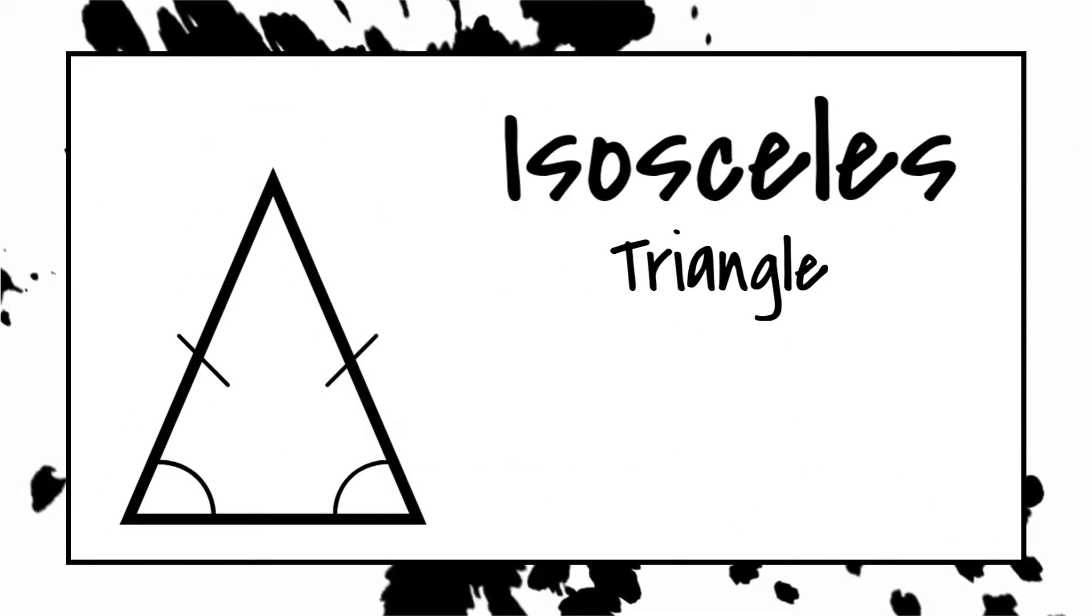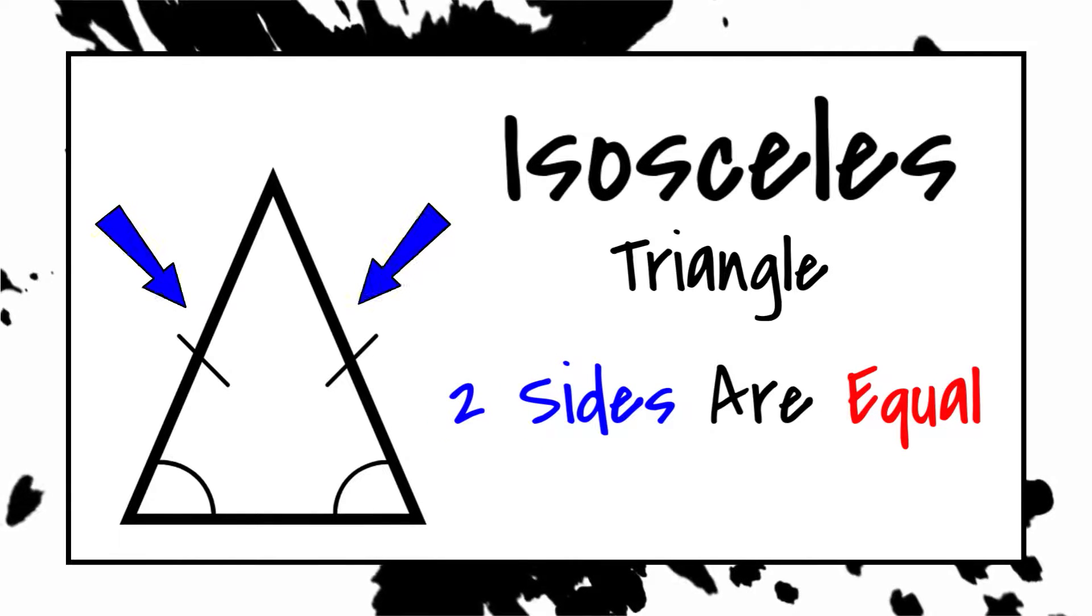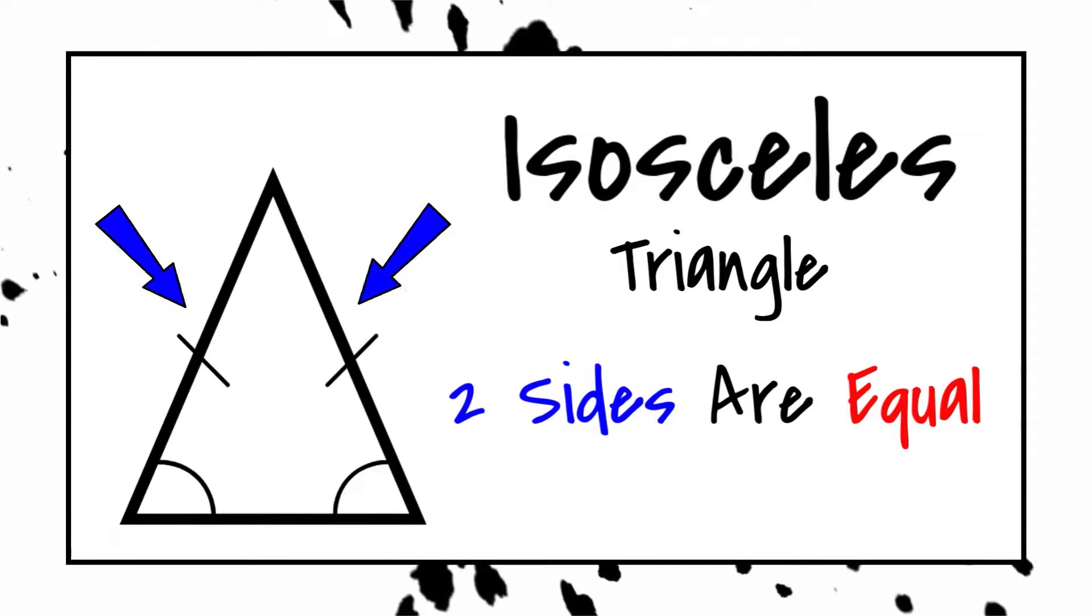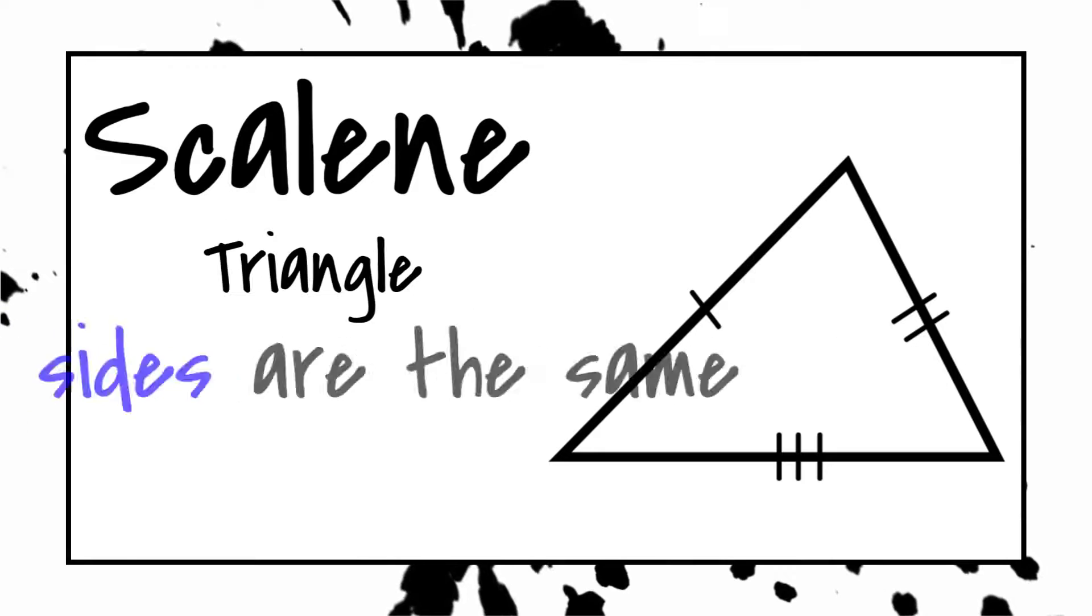An isosceles triangle has two equal sides, not three. The third side is just a little unique. It doesn't take much to think it through. It's not bleak.